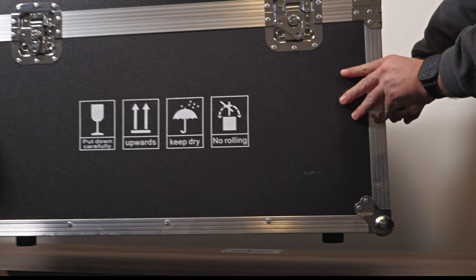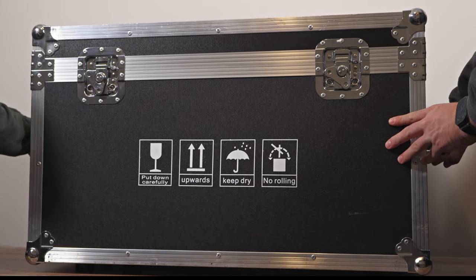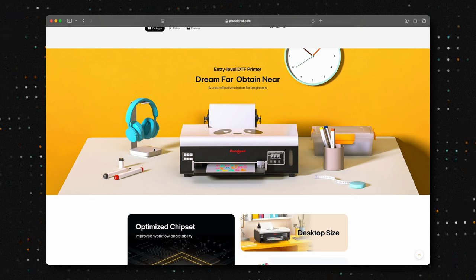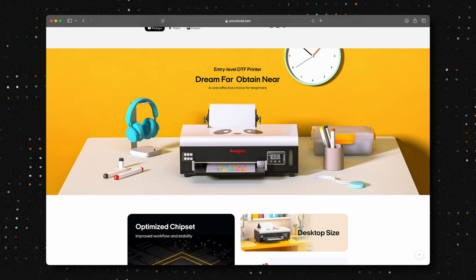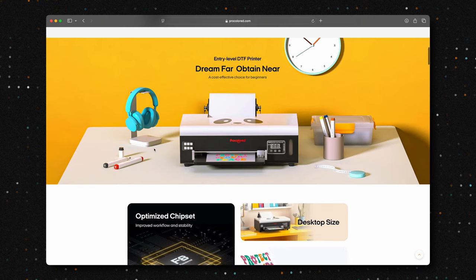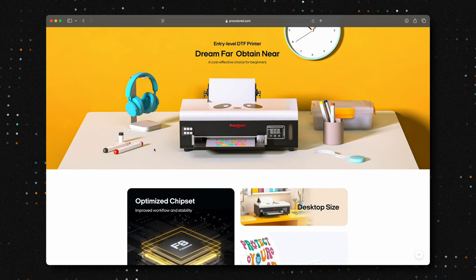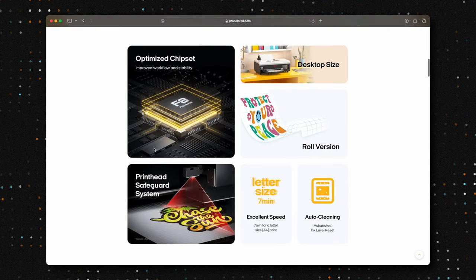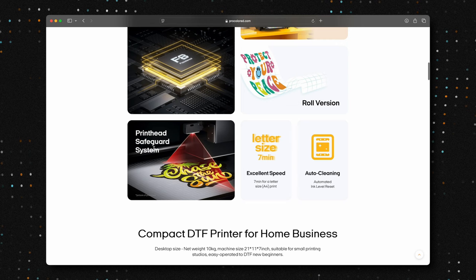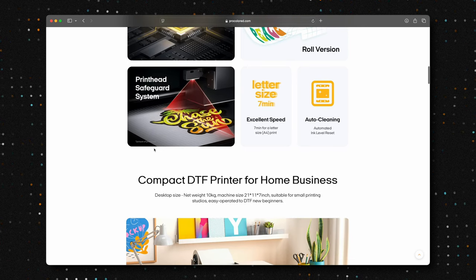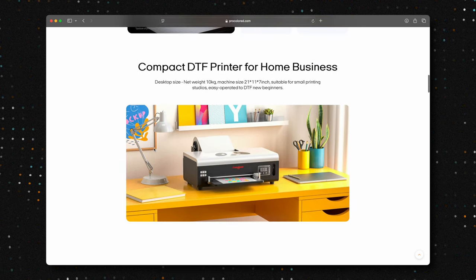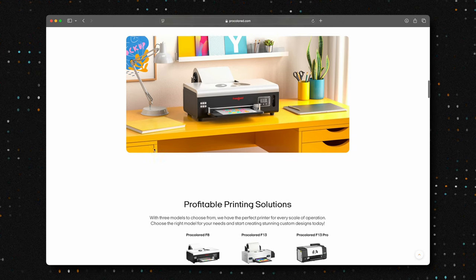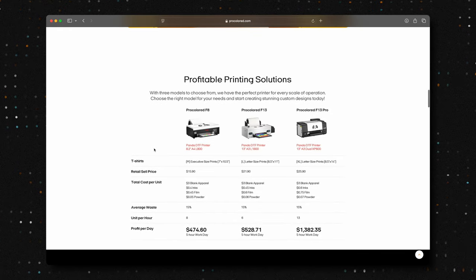As we dive into the unboxing of this amazing printer, we want to say a huge thank you to ProColored for generously sending us this incredible DTF setup. This includes the F8 DTF printer, an oven, and a heat press, all of which we'll be showcasing in this video. Getting into direct-to-film DTF printing has been on our crafting bucket list for quite some time, and we're beyond excited to finally have the opportunity to explore this game-changing technology. Whether you're a seasoned crafter or someone just curious about what DTF printing can offer, you're in for a treat.